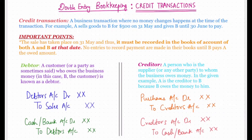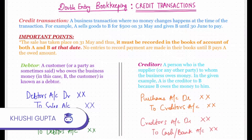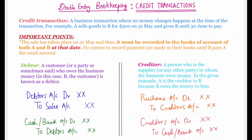This is Unit 2 of double entry bookkeeping: credit transactions. A credit transaction is a business transaction when no money changes hands at the time of the transaction. For example, A sells goods to B for $500 on 31st May and gives B until 30th June to pay, so 30th June is the due date.